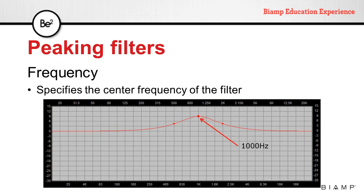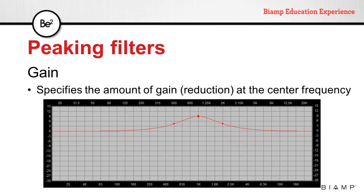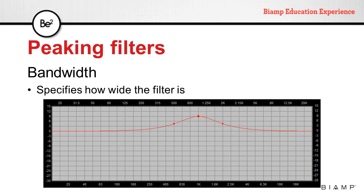Peaking filters can offer control over the center frequency of the filter, the amount of gain or reduction applied to that frequency, and the filter bandwidth that specifies the frequency range between the minus 3 dB points located on either side of the center frequency. Bandwidth can be measured in Q or octaves. Some peaking filters are fixed bandwidth, as they don't offer control over this parameter.